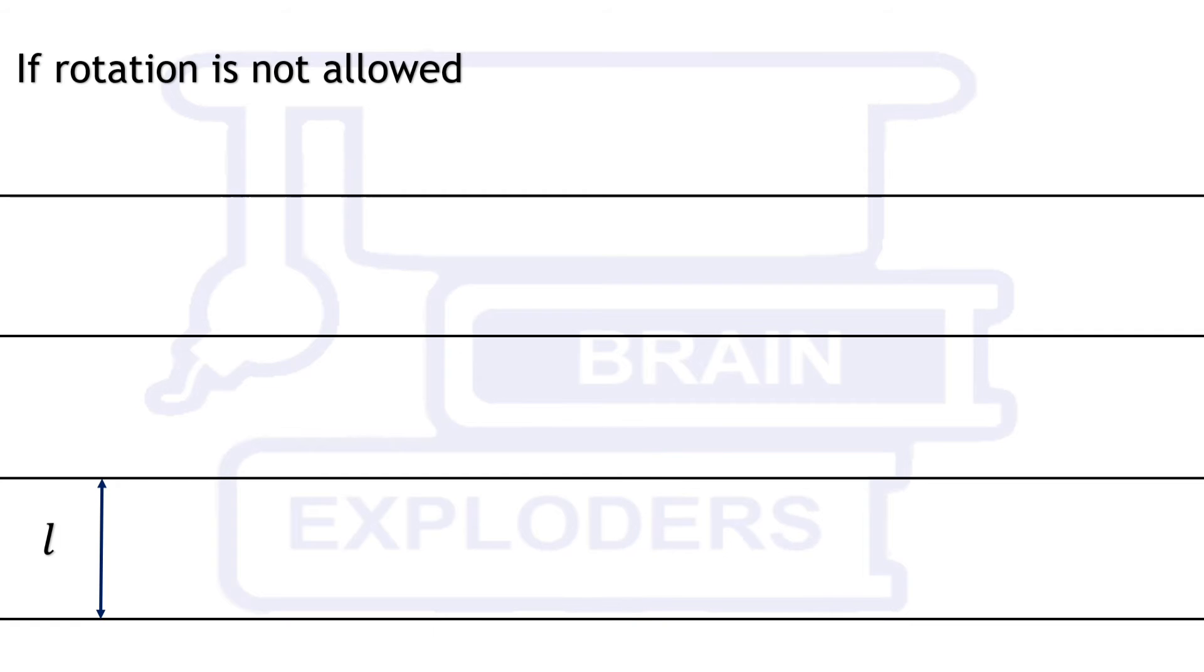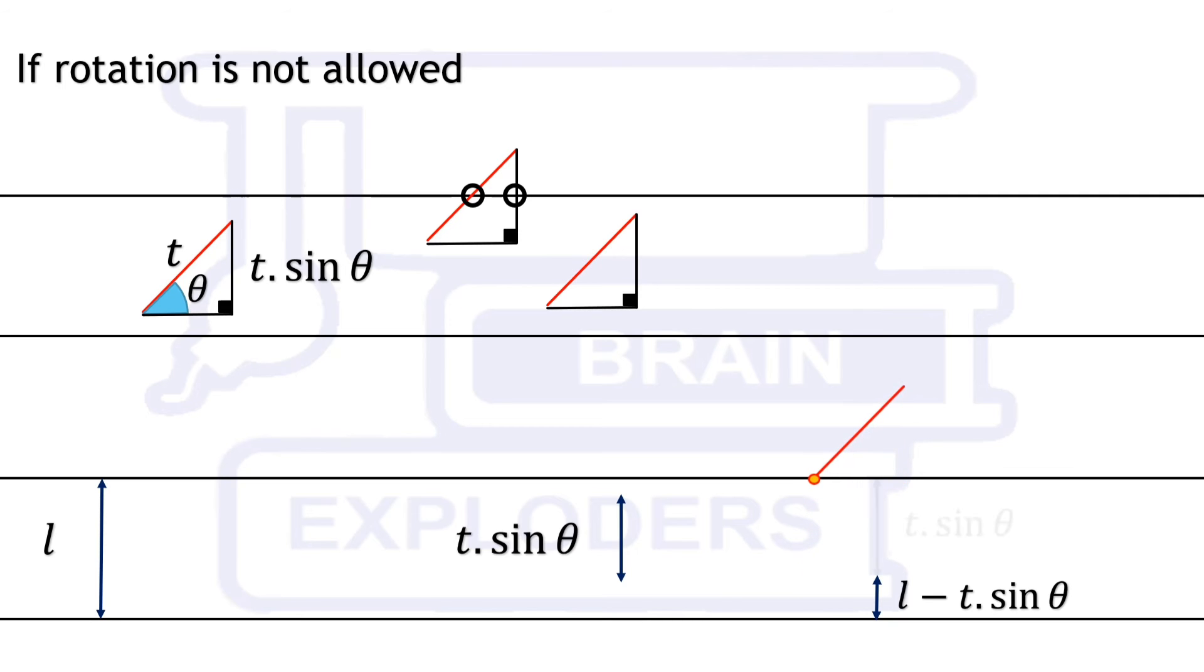If needle is not vertical and is making certain angle with the horizontal, then we can solve this problem by making a right angle triangle using the horizontal and vertical lengths. In this triangle, hypotenuse and perpendicular either both are intersecting or both are not. Hence, we can solve this problem as previous problem by considering t sin theta as the length of a vertical straight needle. For l-t sin theta distance, needle is not intersecting and for remaining length, it is intersecting.